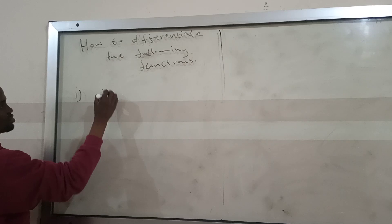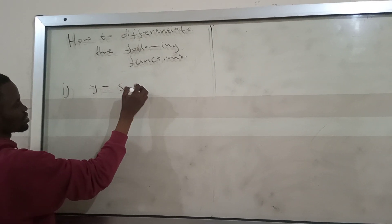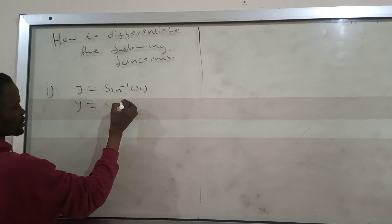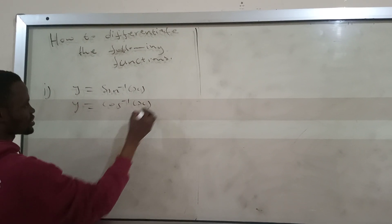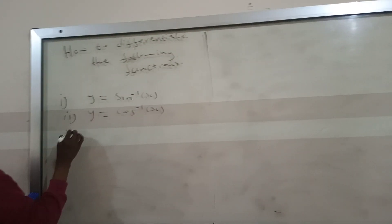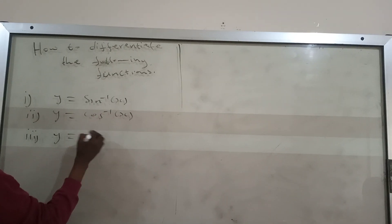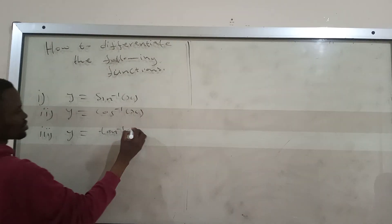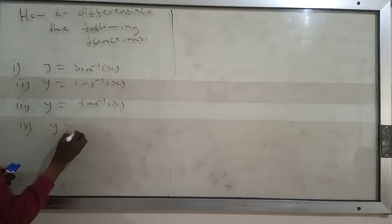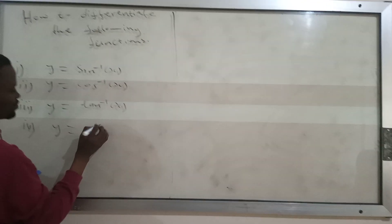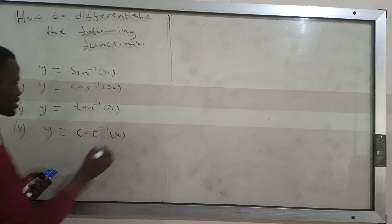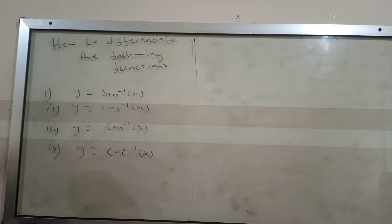The four functions are: (i) y equals sine inverse of x, (ii) cos inverse of x, (iii) y equals tan inverse of x, and (iv) y equals cos inverse of x. So how to differentiate these following functions?